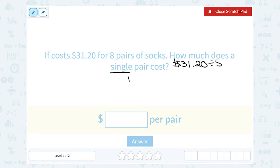Since we have a decimal here, $31.20, we might want to set this up as a long division problem with decimals. 31.20 divided by eight.